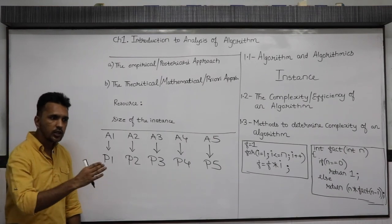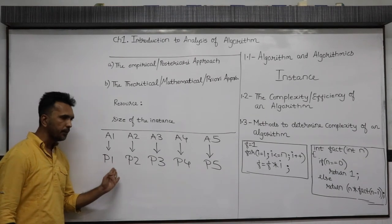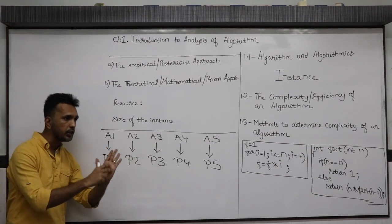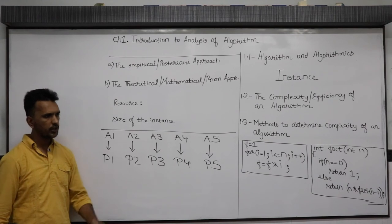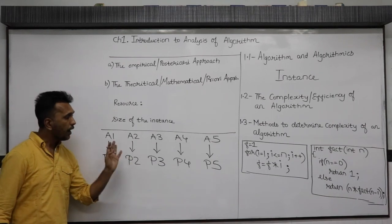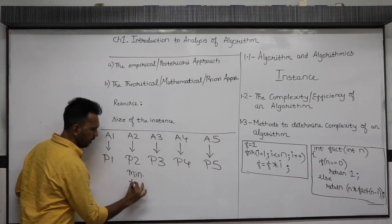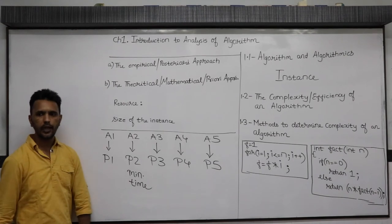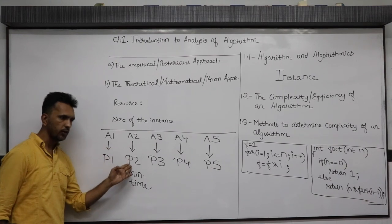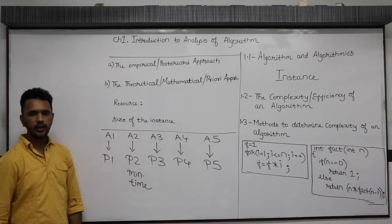Then you try various instances — valid inputs — the same valid input on each program, and you actually measure how much time they take using library functions. Let's say you find that P2 takes minimum time. Then you select algorithm A2, use it in the real world, and discard all others. This technique is called the empirical approach.